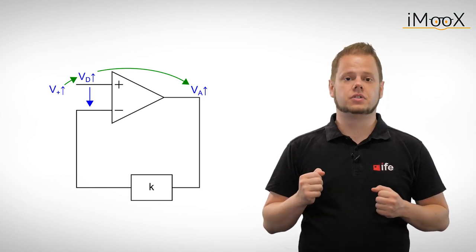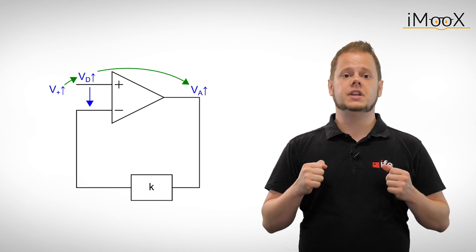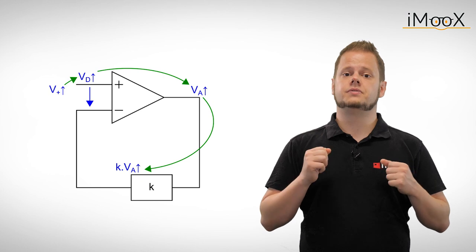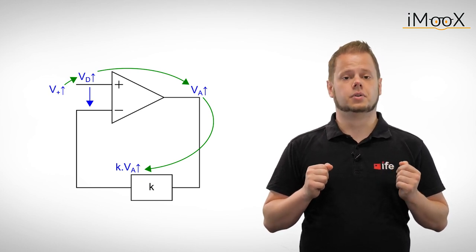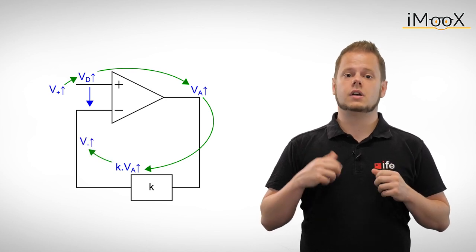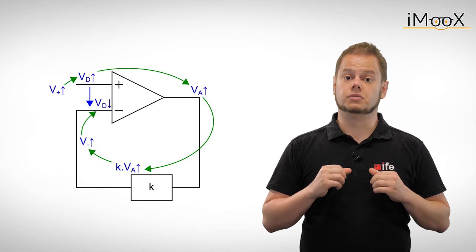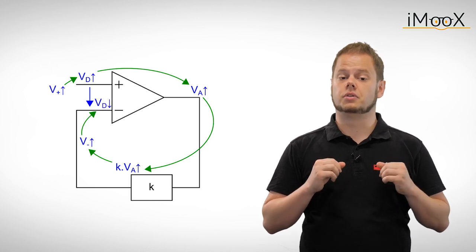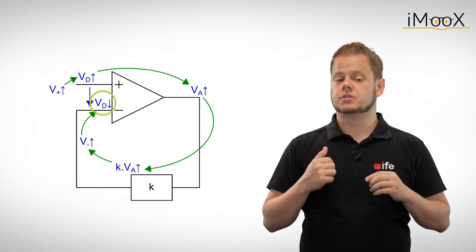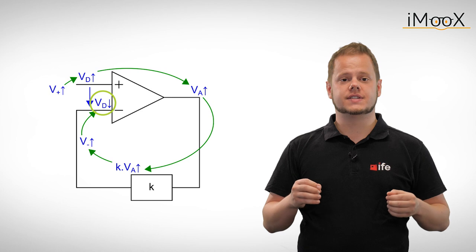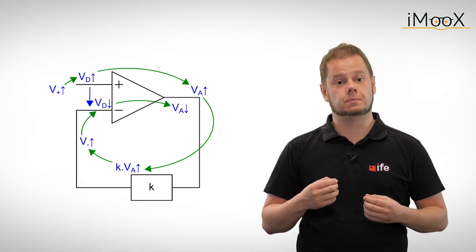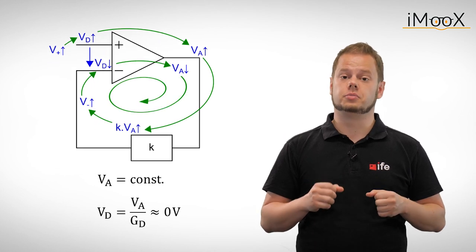Along with the output voltage VA, the output of the feedback network K times VA rises. As the output of the feedback network is connected to the inverting input of the operational amplifier, VD increases. Thus the voltage at the inverting input approaches the input voltage V plus and the differential mode voltage VD becomes smaller. This decrease in VD causes the output voltage VA to decrease again until the circuit has reached a constant output voltage.